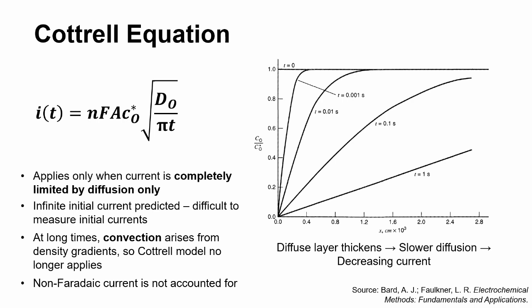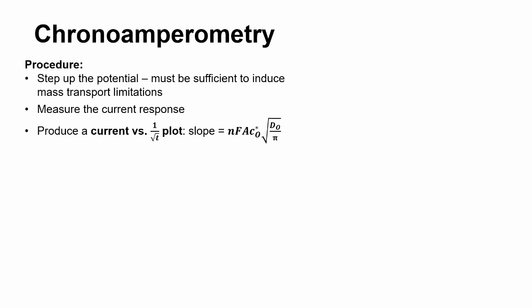Nevertheless, the Cottrell equation opens up a few experimental techniques to characterize diffusion in electrochemical systems. One of them is chronoamperometry, where current-time data from a potential step experiment can be fit to this model, and the diffusivity can be calculated.